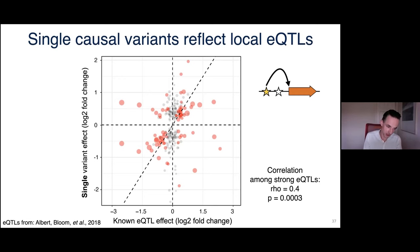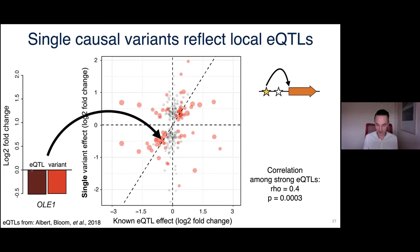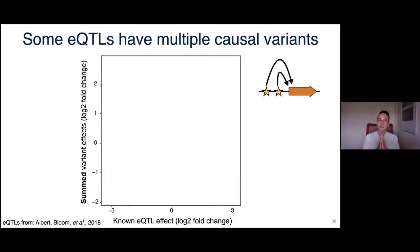For the OLE1 variant specifically, the MPRA effect explains the mapped eQTL effect very well. Some promoters had not just one causal variant but multiple. When we sum the effects of those independently significant variants, the correlation with local eQTLs improved from 0.4 to 0.5, suggesting that multiple causal variants per promoter are common.